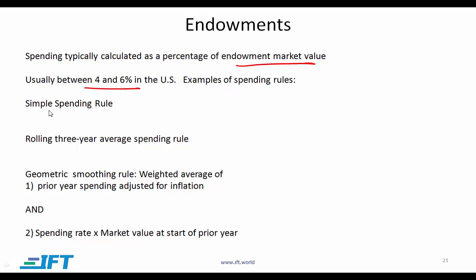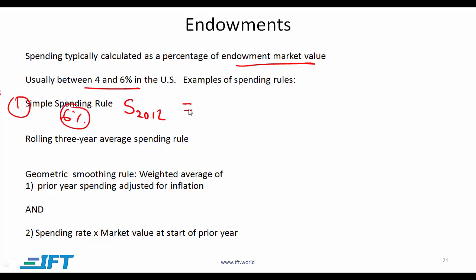You need to know the three most commonly used rules. The first is the simple spending rule, which says you apply a certain percentage — let's say 6% — to determine spending for 2012. That would be 6% multiplied by the market value of assets at the end of 2011, because end of 2011 is the start of 2012.